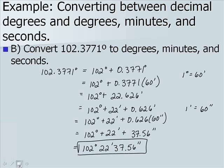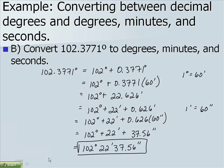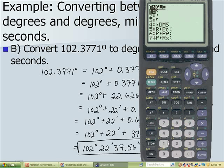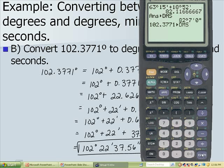Now let's look at how easy this is to do on the calculator. We type in 102.3771, press 2nd, apps, number 4, and hit enter, and we see it converts for us. You're welcome to use either method.